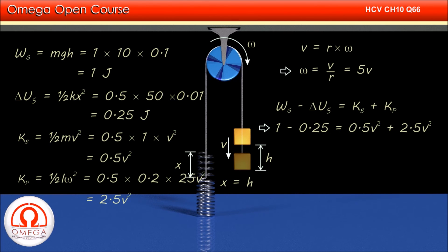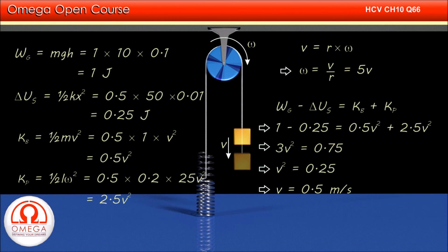Putting the values, 1 - 0.25 = 0.5v² + 2.5v². Simplifying, 3v² = 0.75, so v² = 0.25. This implies v = 0.5 m/s. This is our answer.